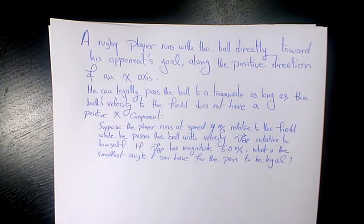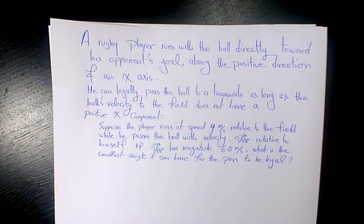Suppose the player runs at speed 4 meters per second relative to the field while he passes the ball with velocity VBP relative to himself. If VBP has magnitude 6 meters per second, what is the smallest angle it can have for the pass to be legal?